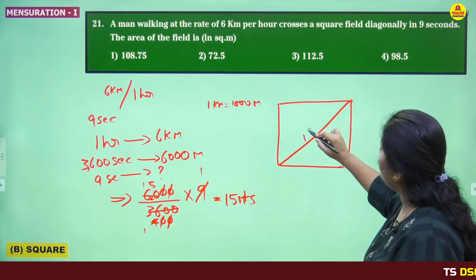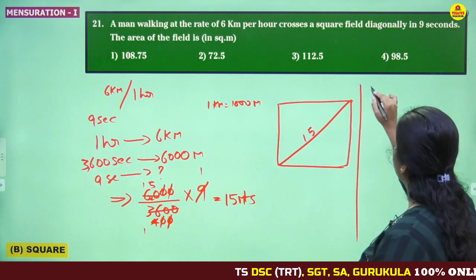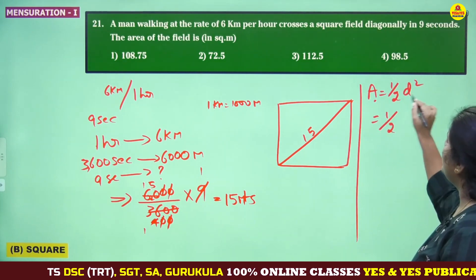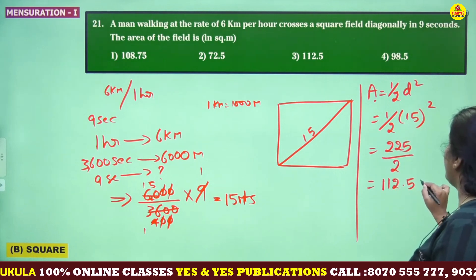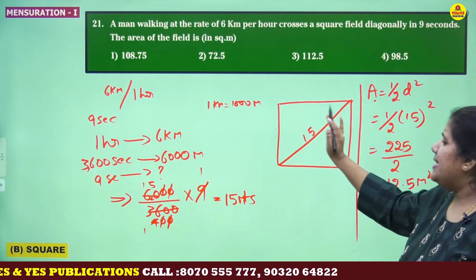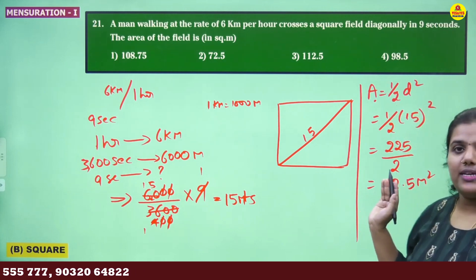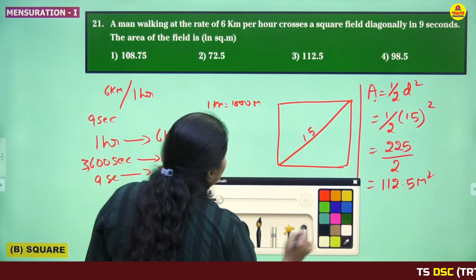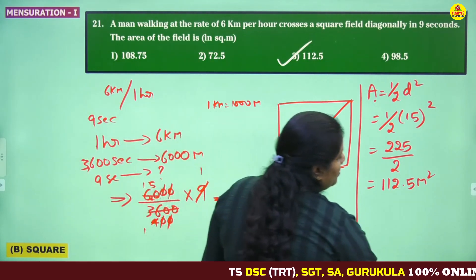He covered that distance diagonally, crossing the square field. So the diagonal measurement is 15 meters. Area when diagonal is known is: half into D squared. So area equals half into 15 squared, which is 225 divided by 2, equals 112.5 meter square. Instead of calculating the side again, we can directly apply the formula: area equals half into D squared. Half into 15 squared equals 112.5 meter square. Option 3 is the correct answer.